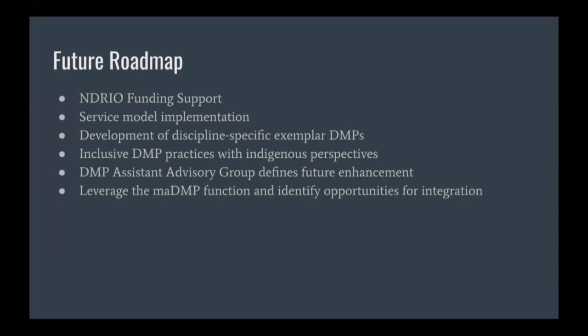In terms of future roadmap, in 2020 Portage Network received funding from NDRIO — the New Digital Research Infrastructure Organisation, established in 2019 to advance a research-focused, accountable, agile, strategic, and sustainable digital research infrastructure ecosystem for Canadian researchers. The current funding cycle runs from October this year to March 2021. During this phase, we will continue to complete the DMP Assistant 2.0 migration, work on high-priority enhancements, and stabilize the service model we have just started to introduce to the community.